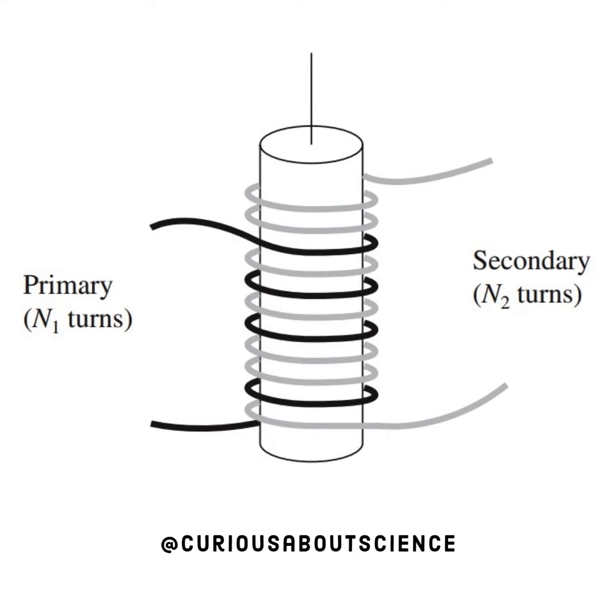All right, so let's go ahead and draw it out. We see that we have some core here, a coil, primary turns N1, secondary N2, with some core in between.